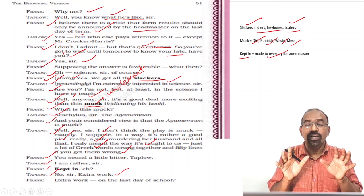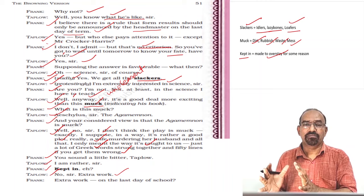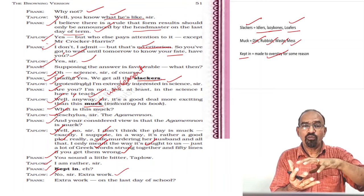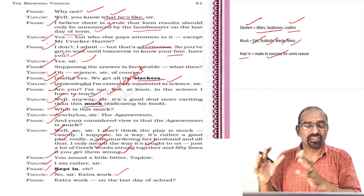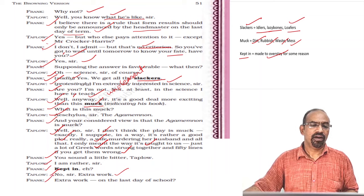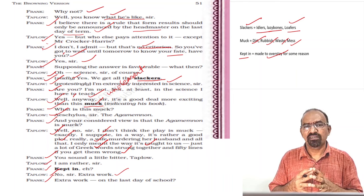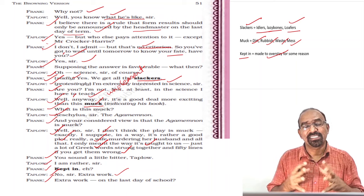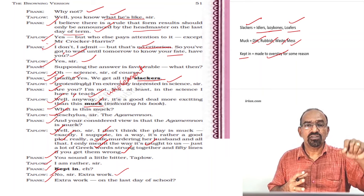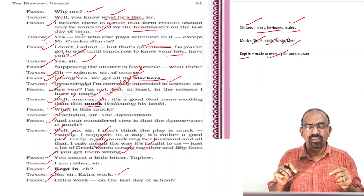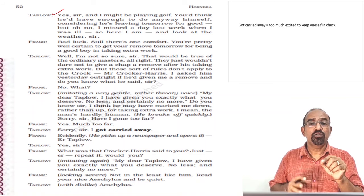After a pause Frank exclaims, 'Good lord, what are our schools coming to?' — an expression of disbelief upon hearing that some masters are sadists. Taplow says, 'Anyway, the Crock is not a sadist — that is what I am saying. He would not be so frightening if he were, because at least it would show he had some feelings. But he hasn't any particular feeling — he is all shriveled up inside.' Shriveled up means he has kept all his feelings hidden, shrunken inside his mind, never revealing them to the students.